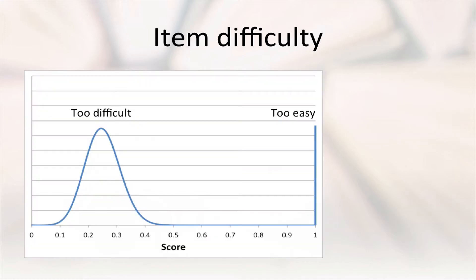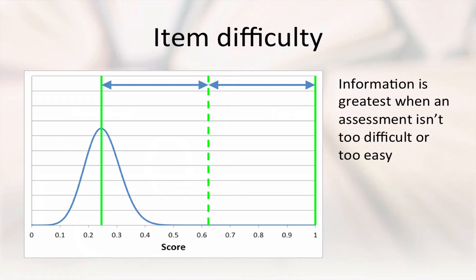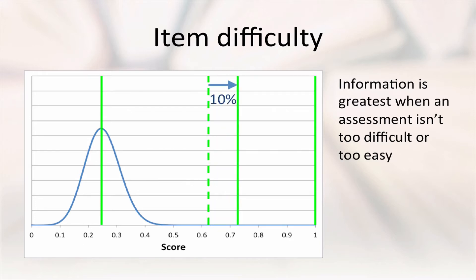Similarly, assessments that are too difficult or too easy will have score distributions like those shown on the left and right here, for a four-choice, multiple-choice test. Tests like these tell us very little about each student's understanding that we didn't know already. The useful feedback students and teachers get from an assessment is maximized when the difficulty is about halfway between these, and in fact, a little further from the too-hard distribution, which has some spread to it.